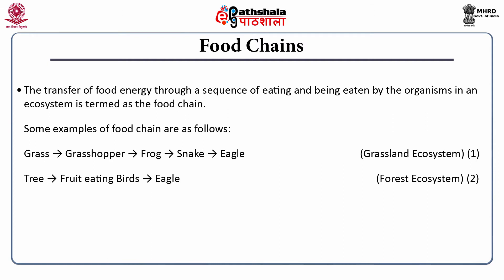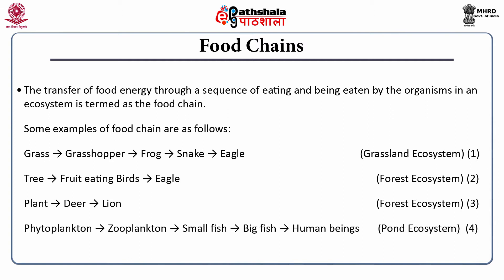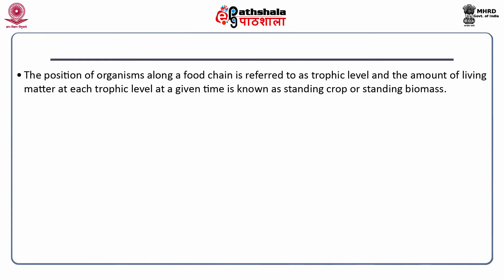The next is a forest ecosystem food chain, starting with plants, then plants are eaten by the deer, and then deer is eaten by the lion. The next is a pond ecosystem food chain, starting with phytoplanktons, phytoplanktons eaten by zooplanktons, zooplanktons eaten by small fish, small fish eaten by big fish, and big fish consumed by human beings. The position of organisms along a food chain is referred to as a trophic level, and the amount of living matter at each trophic level at a given time is known as standing crop or standing biomass.